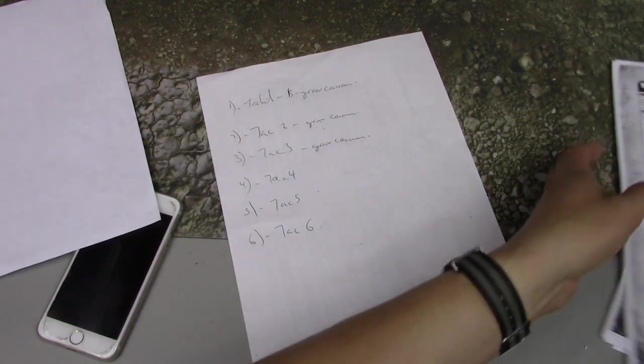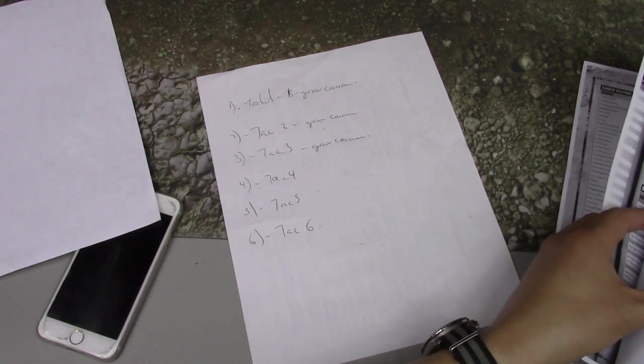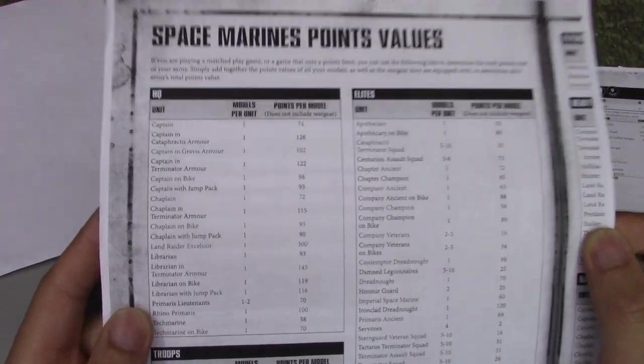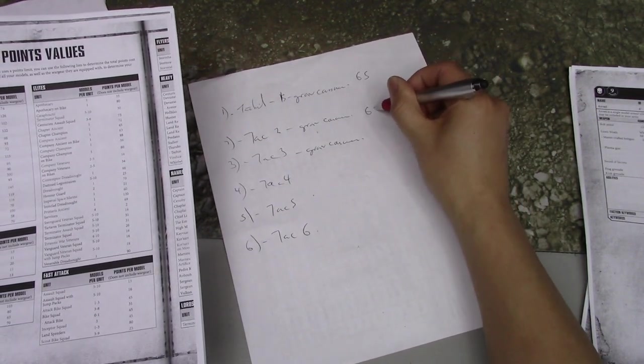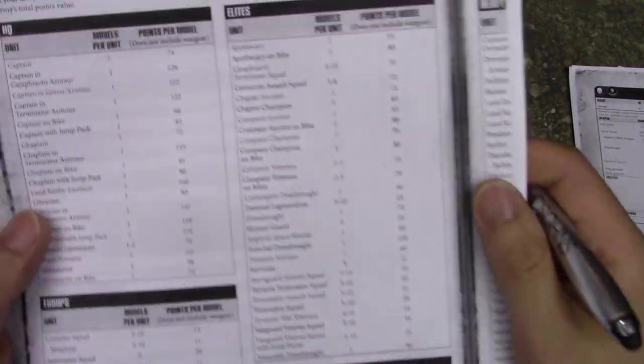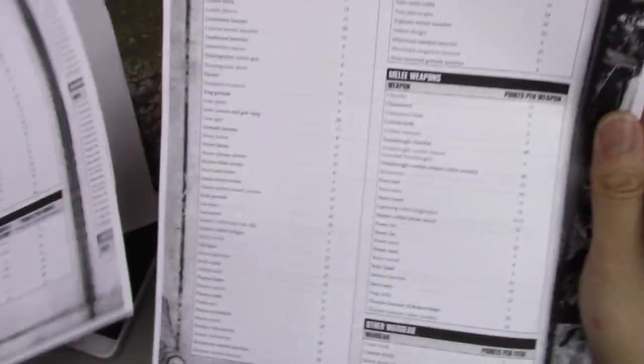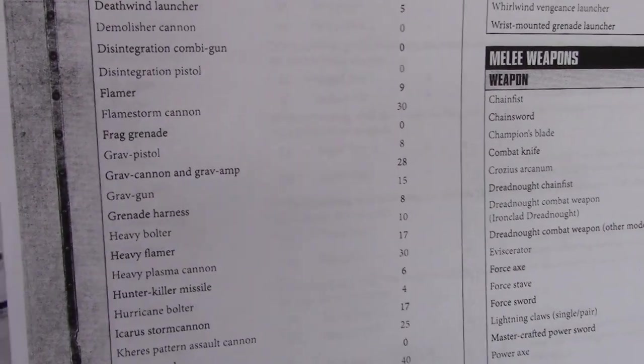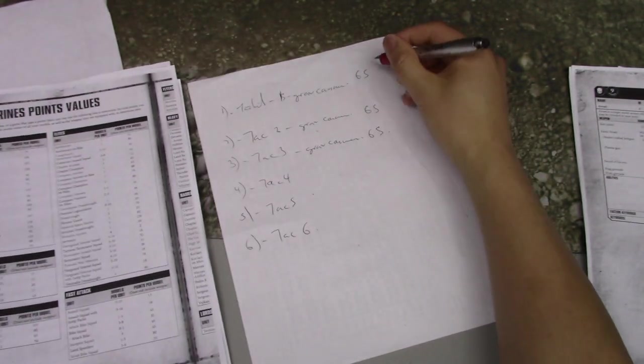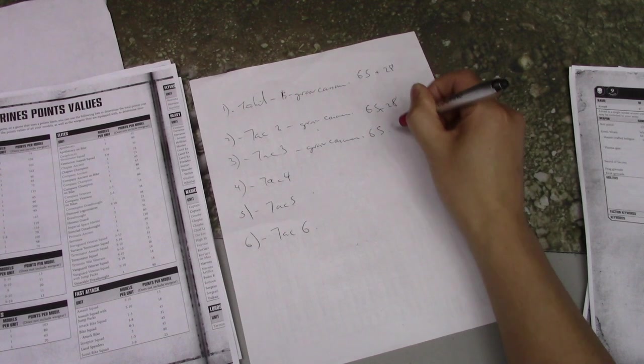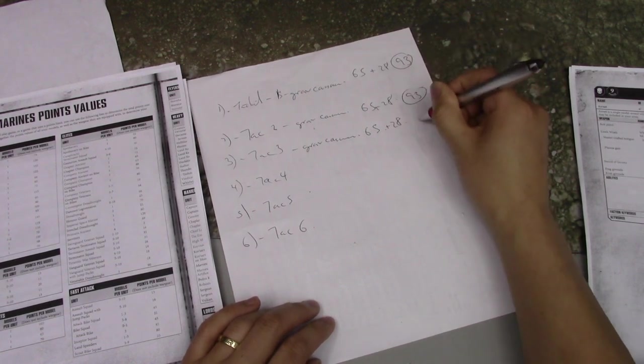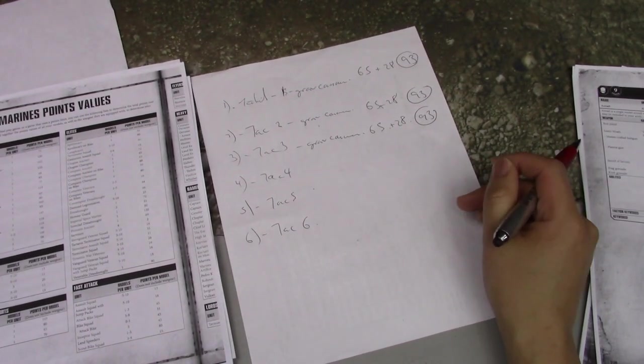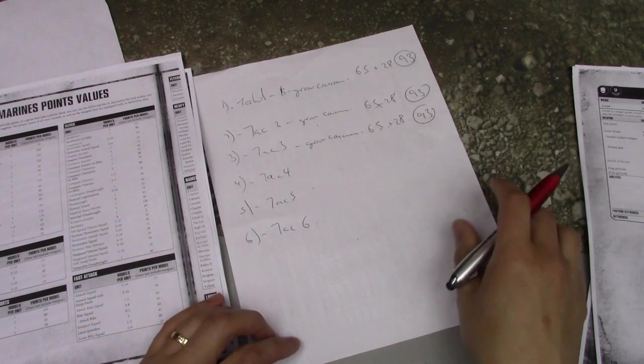So we know from our Space Marine reference list that tactical squads are 13 points per model, and I'm doing five. So that's 65 points for just the models. And then for the grav cannon, it's 28 points. So it's 93 points for my tactical squads. Which is actually cheaper than it used to be. It used to be 105 for a tactical squad with grav cannon.